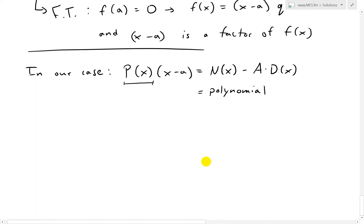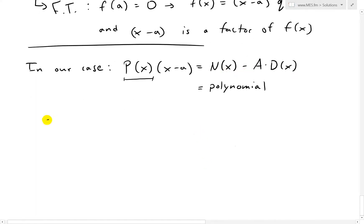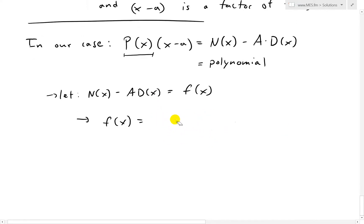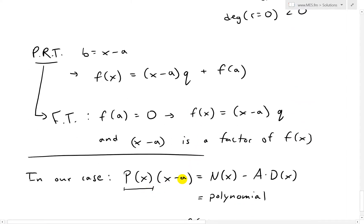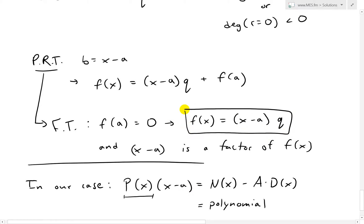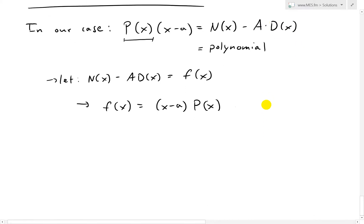So this equals a polynomial. To make it look like the factor theorem, I'll say let N(x) - A*D(x) equal this function F(x). So then what we end up having is F(x) equals P(x) times (X-A). Or to make it look like the other one, just put the (X-A) in front. So (X-A) times P(x). That's what we have over there, and that's exactly it. If we look back here, that's just this part here.